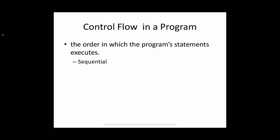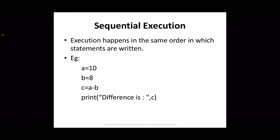The default control flow is sequential — the processor executes instructions in the exact order they are written. The second type is non-sequential, which differs from the written order. Two types of non-sequential control flow exist: selection and iteration. We will examine all three types, starting with sequential execution.